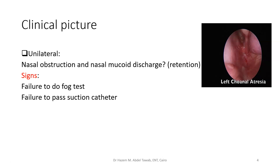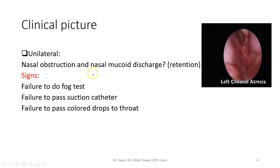Failure to pass a suction catheter is another sign. Pediatricians after delivery do suction through the mouth and nostrils. If the catheter does not pass on one side, they feel resistance. So the early diagnosis is made by them — they will notify the ENT doctor of a suspected child with unilateral choanal atresia. Then there is failure to pass colored drops to the throat, though this is rarely used now because we depend on endoscopy. If the suspicion is raised by the fog test or catheter failure, we go for endoscopy or CT scan — fiber optic for infants or rigid scope if older.